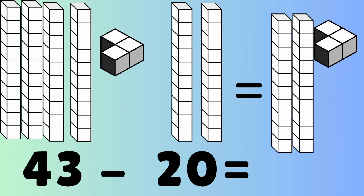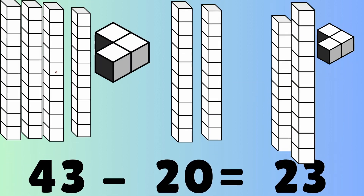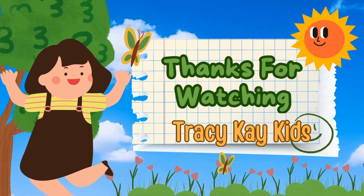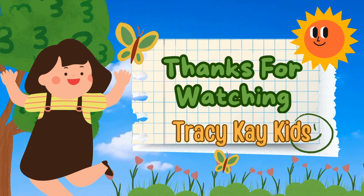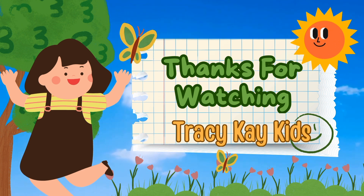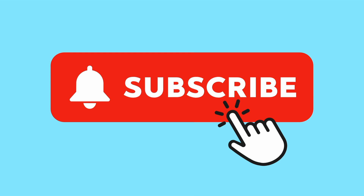Next up, forty-three minus twenty. What would you do to figure this out? You need to mark off two blocks of ten. Forty-three minus twenty leaves twenty-three. Thank you for watching. If you enjoyed this video, please hit the like button and don't forget to subscribe to the channel so you'll know when future videos are coming. Thank you for watching.